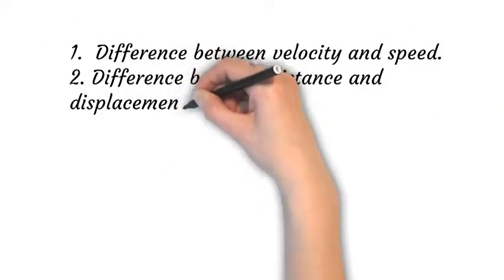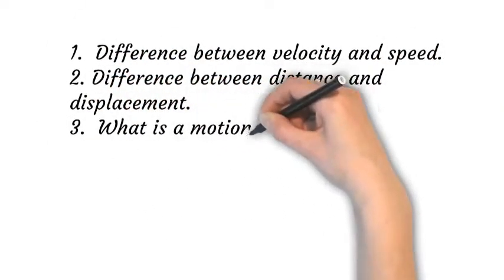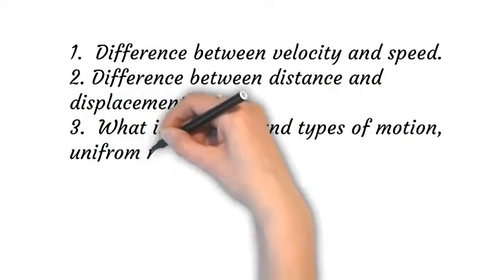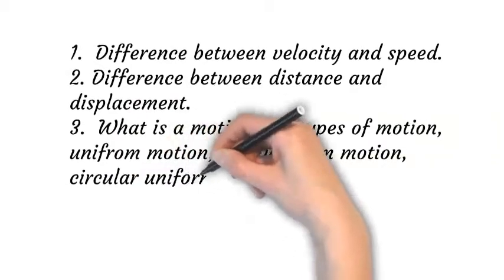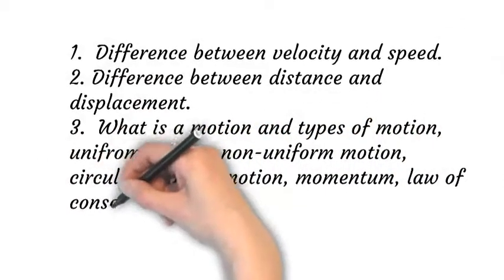What is motion? What are the different types of motion? Uniform motion, non-uniform motion, circular uniform motion, momentum, law of conservation of momentum, and Newton's laws of motion.